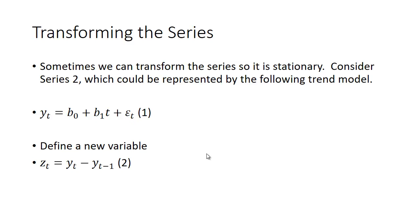Well, we could transform the data by differencing it and perhaps get rid of the trend and make it stationary. So if we defined a new variable z_t which equals y_t minus y_(t-1), we'll call that equation (2).